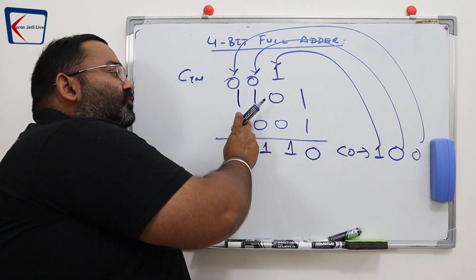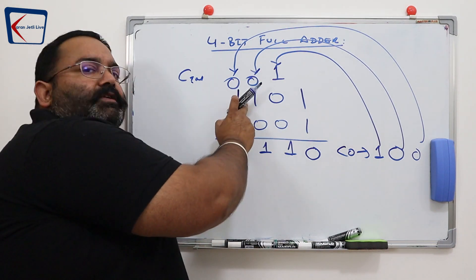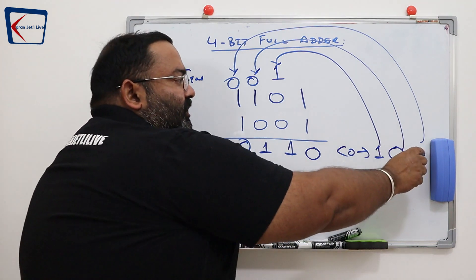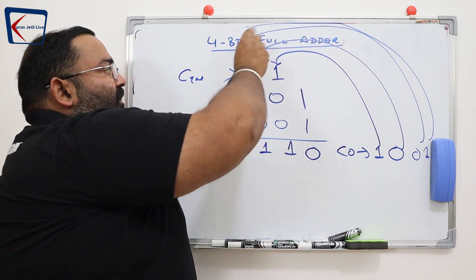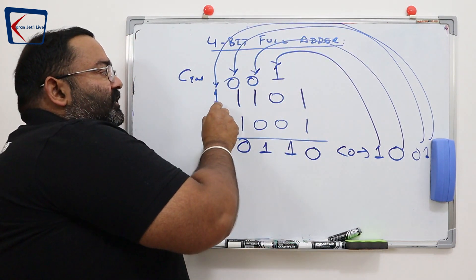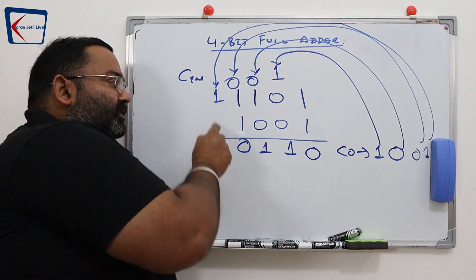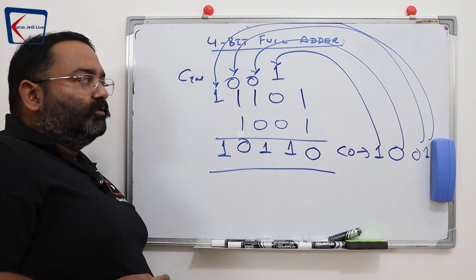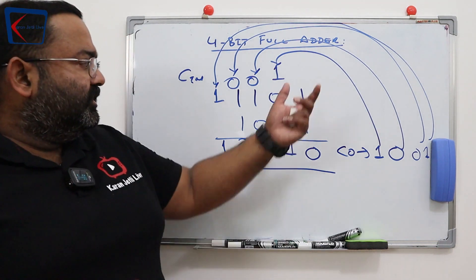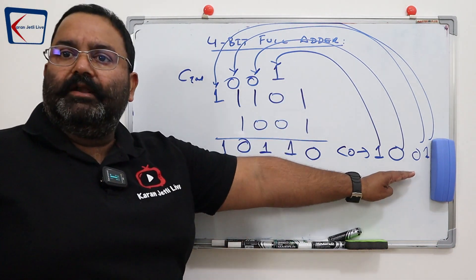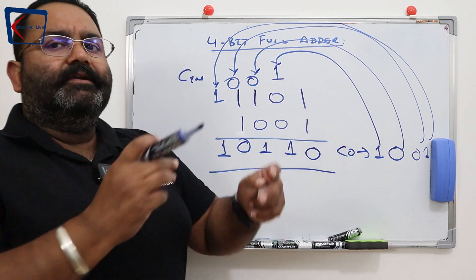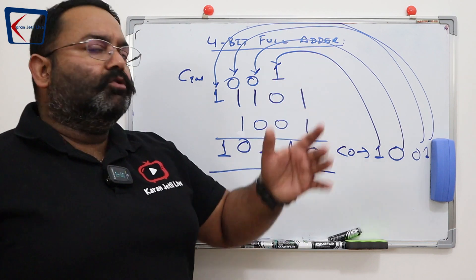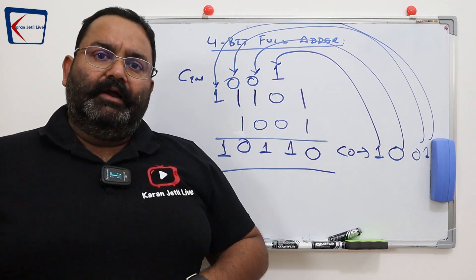Again 0 plus 1 plus 1: basically 0 plus 1 is 1, then adding 1 more gives sum 0 and carry out 1. This carry out then becomes carry-in to the next bit, and here nothing is there. So this is the result. We did a complete addition — I generated the sum, generated the carry out, and to the next bit I added carry-in. The circuit which works like this for 4 bits we call a 4-bit full adder.